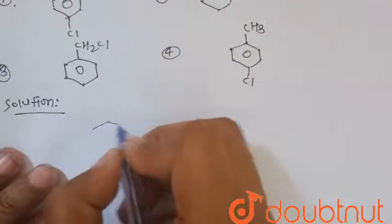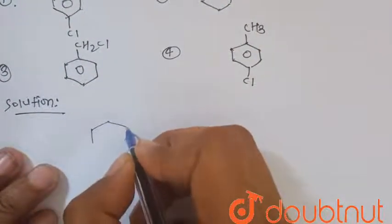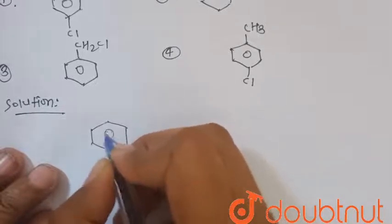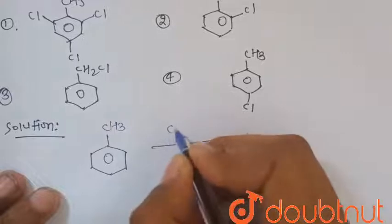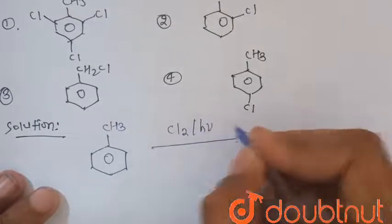So, the reaction of toluene. We know that toluene is this, that is methyl group is attached to the benzene ring. When it is treated with chlorine in presence of light, that is h nu.